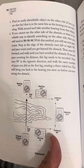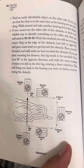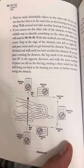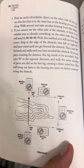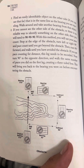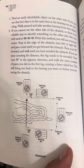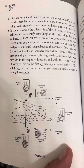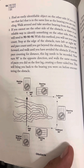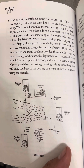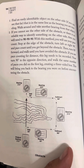Number two: if you cannot see the other side of the obstacle, or there is no reliable way to identify something on the other side, then you will need to 90-90-90. With this method, you will use your pace count. Stop at the edge of the obstacle, turn left or right 90 degrees, and pace count until you get beyond the obstacle.